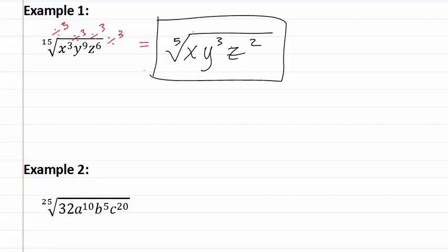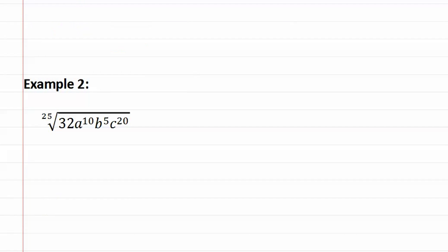Let's look at example two, which also has a number. Here is example two. As you can see, the number thirty-two is in there, which has an exponent of one. Twenty-five, one, ten, five and twenty have nothing in common, and therefore could not be reduced. But, if you know that thirty-two is two to the fifth, then we can replace that in.